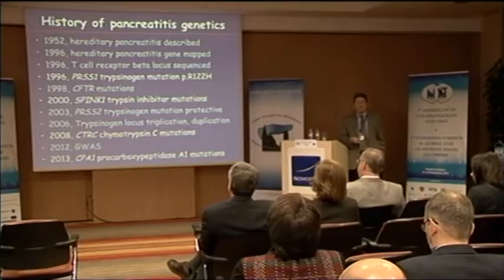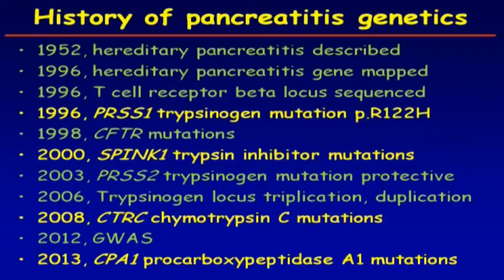I like to show this slide which describes the history of our field. It's one of those rare occasions where you can pinpoint a year — which is 1996 — when everything started; that's the big bang, so to speak. Even though hereditary pancreatitis phenotypes were described as far back as the 1950s, 1996 is when the gene was mapped by three different groups.